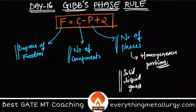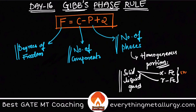Similarly, in solids, consider alpha-Fe and gamma-Fe. These two are different phases because even though they have the same composition and are both solid, they have different crystal structures. Because of that difference in crystal structure, these two are taken as two different phases.